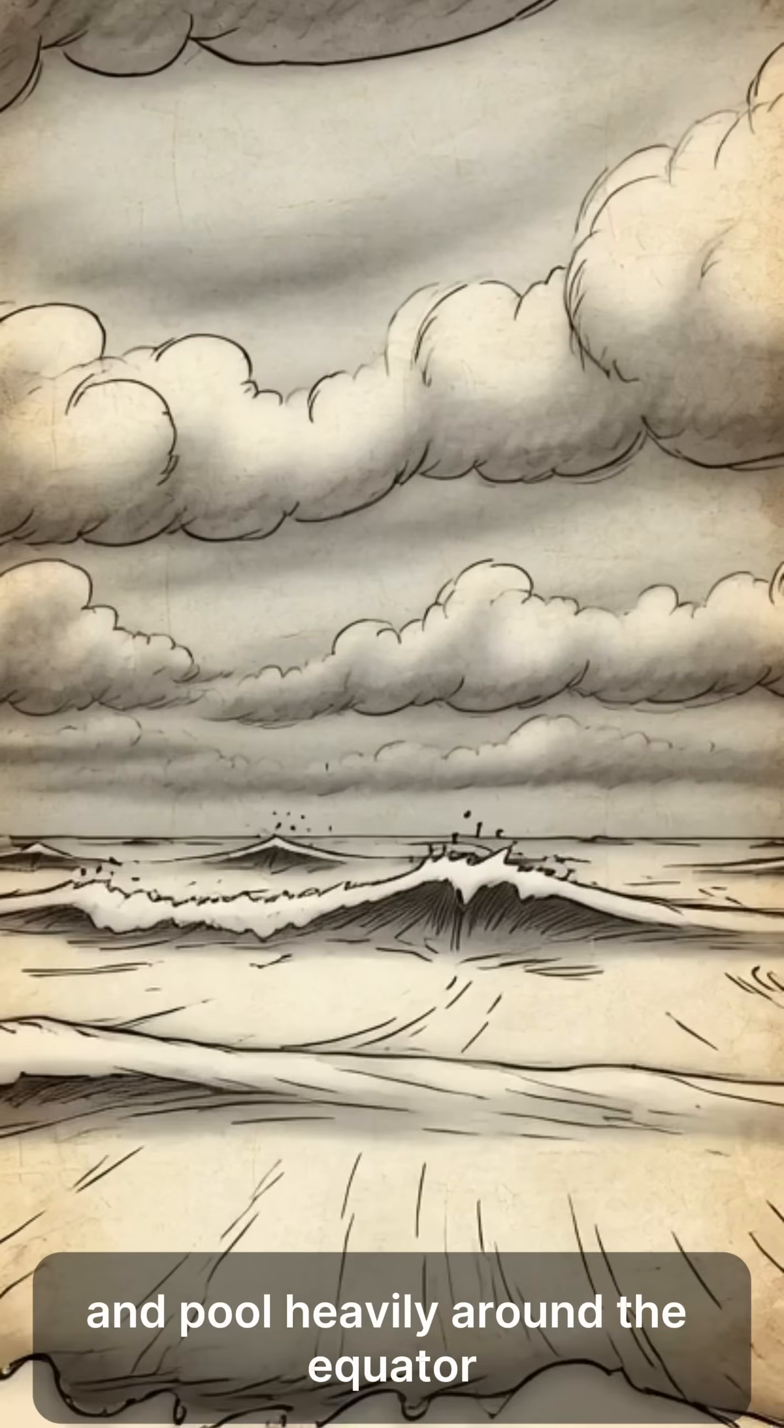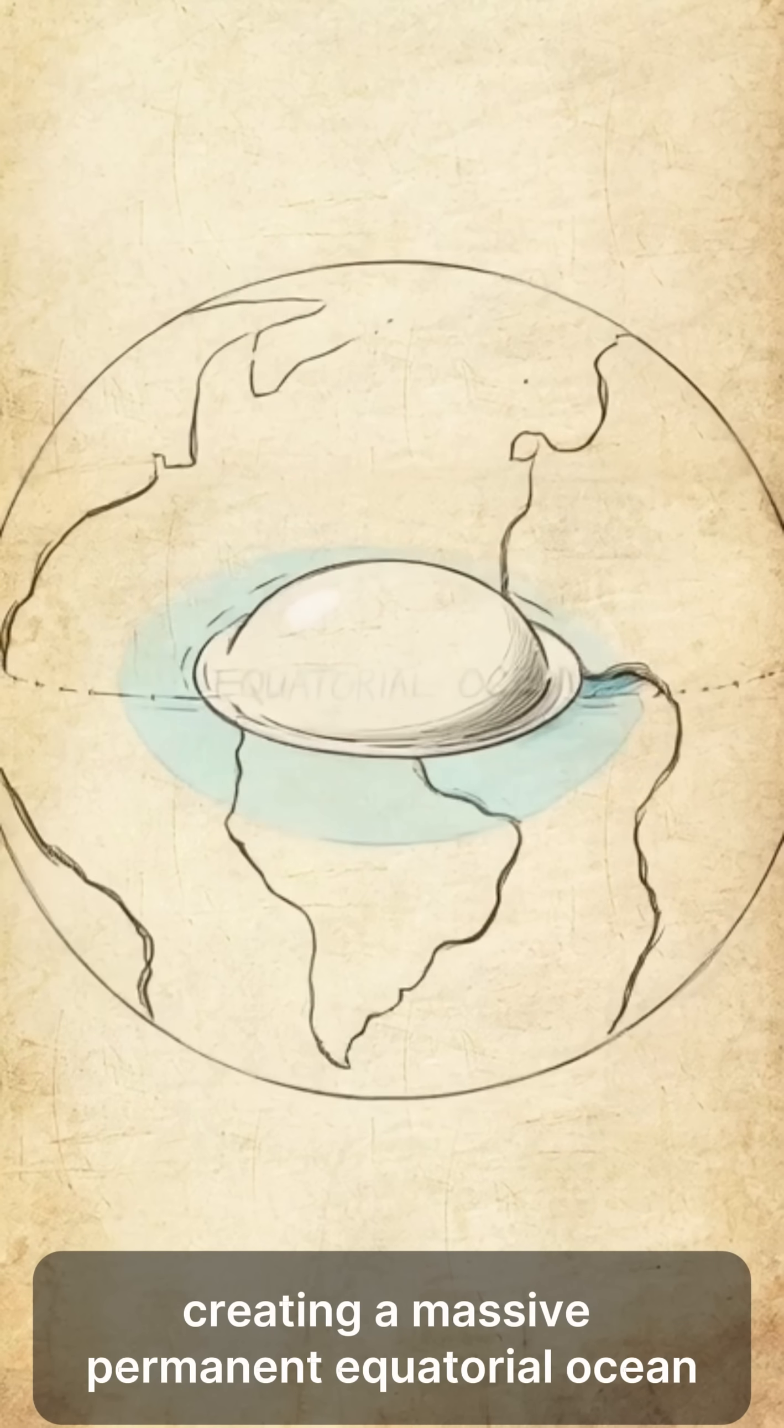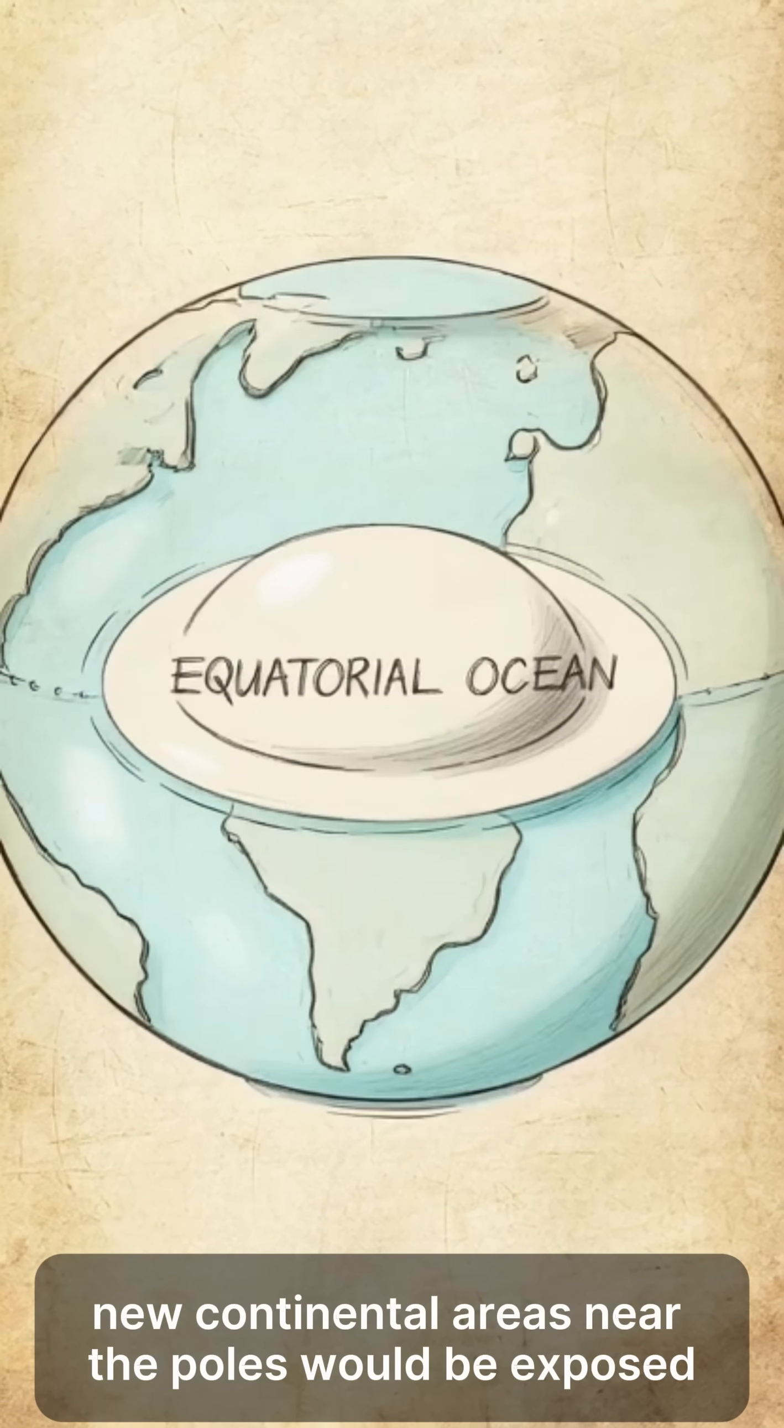Water would immediately migrate away from the poles and pool heavily around the equator, creating a massive permanent equatorial ocean. Vast new continental areas near the poles would be exposed, but they would be lifeless cold deserts.